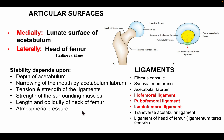The main ligaments present near the hip joint are: the fibrous capsule, synovial membrane, acetabular labrum, iliofemoral ligament, pubofemoral ligament, ischiofemoral ligament, transverse acetabular ligament, and ligament of the head of femur — also known as ligamentum teres femoris.